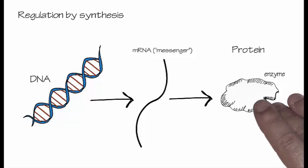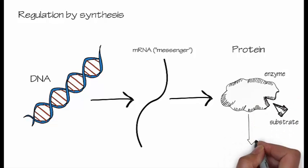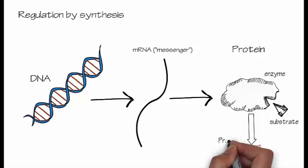For control by synthesis to work, something must happen to the DNA so that the entire process of making the RNA encoding the enzyme is interrupted.